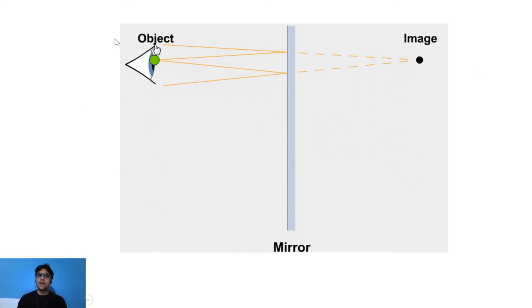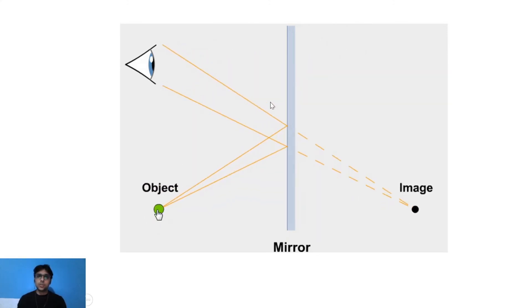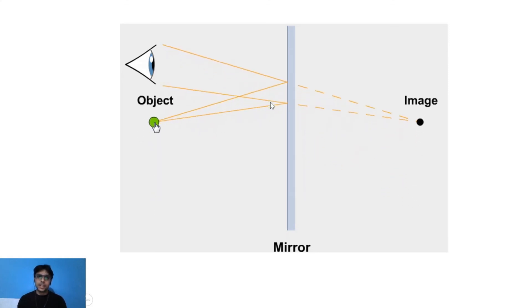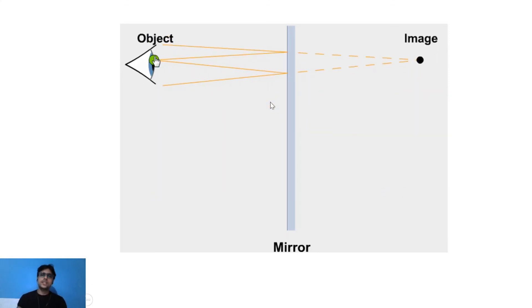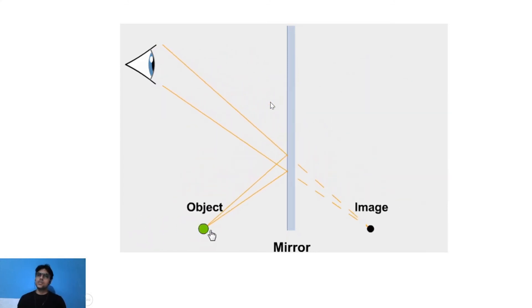We can notice that the image is also moving. Obviously, this is what we use in daily life. When you stand in front of the mirror, you notice that if you do something, instantly you get the same image on the opposite side. This is our plane mirror working.